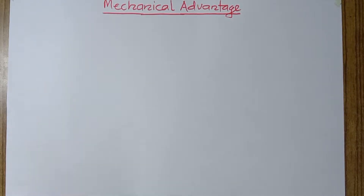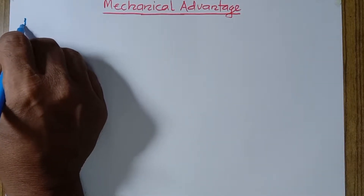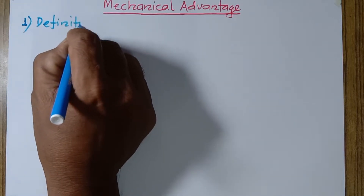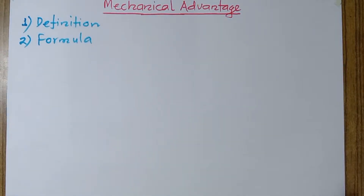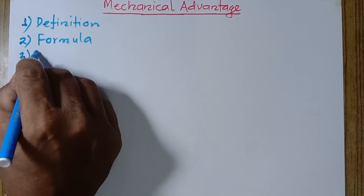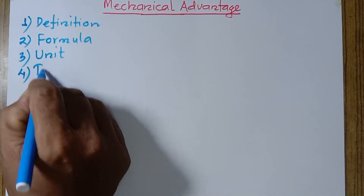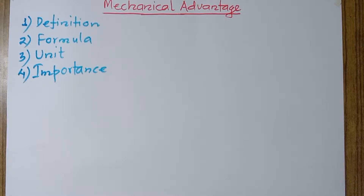Today I'm going to talk about mechanical advantage. This term is very closely related with simple machines and is one of the important terms for simple machines. We'll talk about four different factors: first, the definition; second, the formula or equation; third, the unit; and lastly, the importance. Let's talk about these one by one.